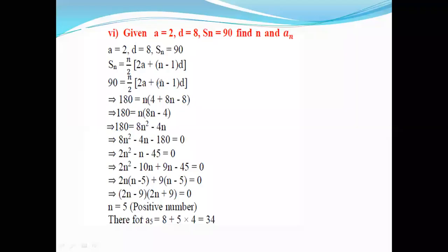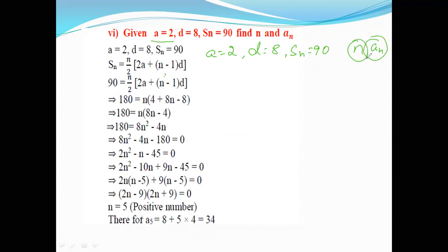Okay students, now we are going to start with the sixth problem. Look at this one carefully. They have given the value of a: a is equal to 2, d is equal to 8, and Sn is equal to 90. They are asking us to find out n and aₙ. First we have to find out the value of n, then we have to find out the value of aₙ.